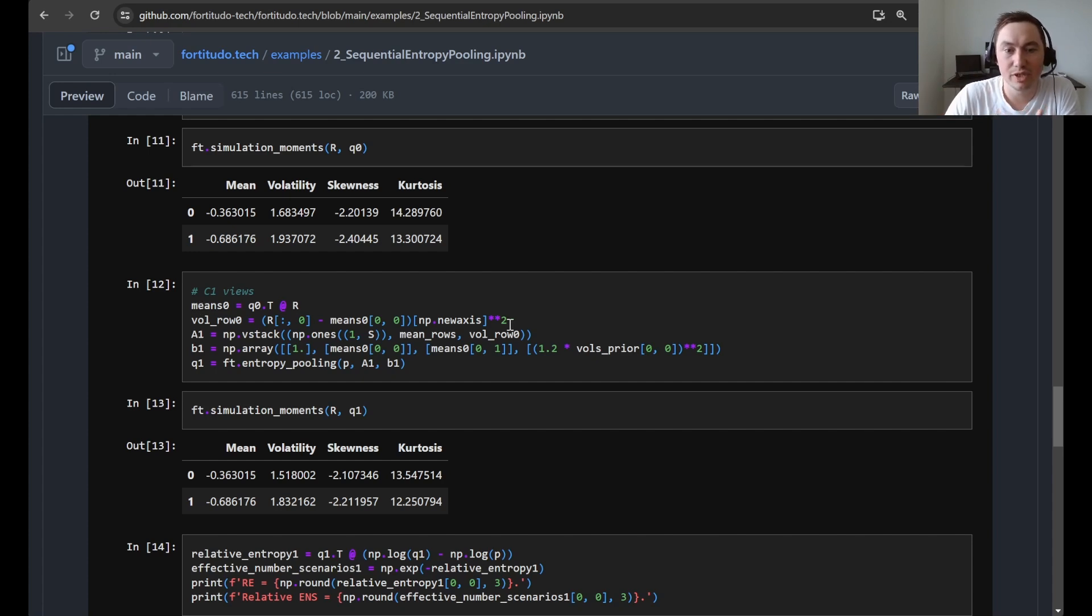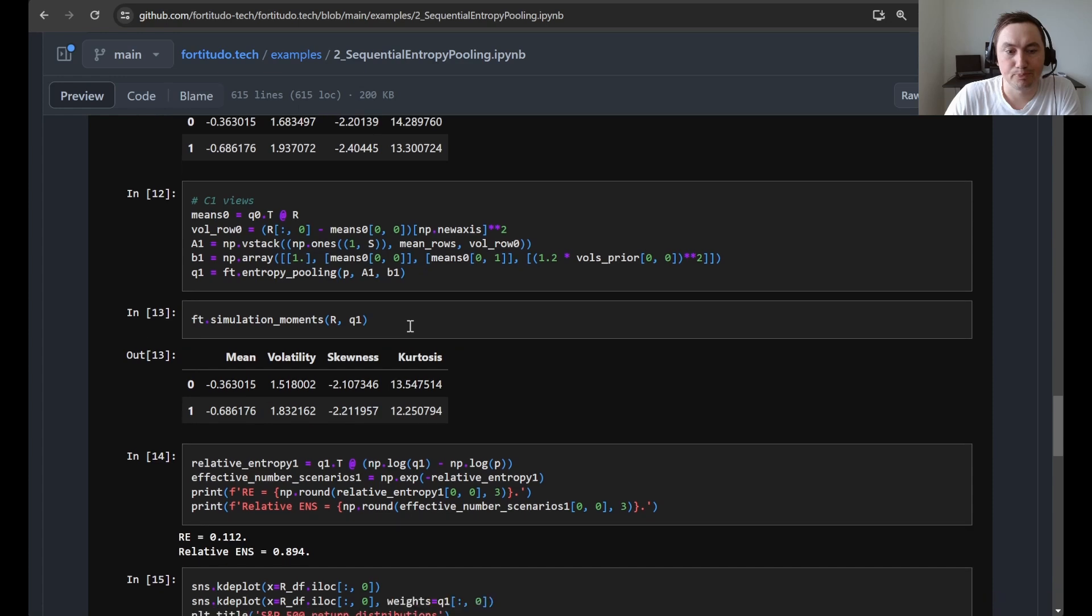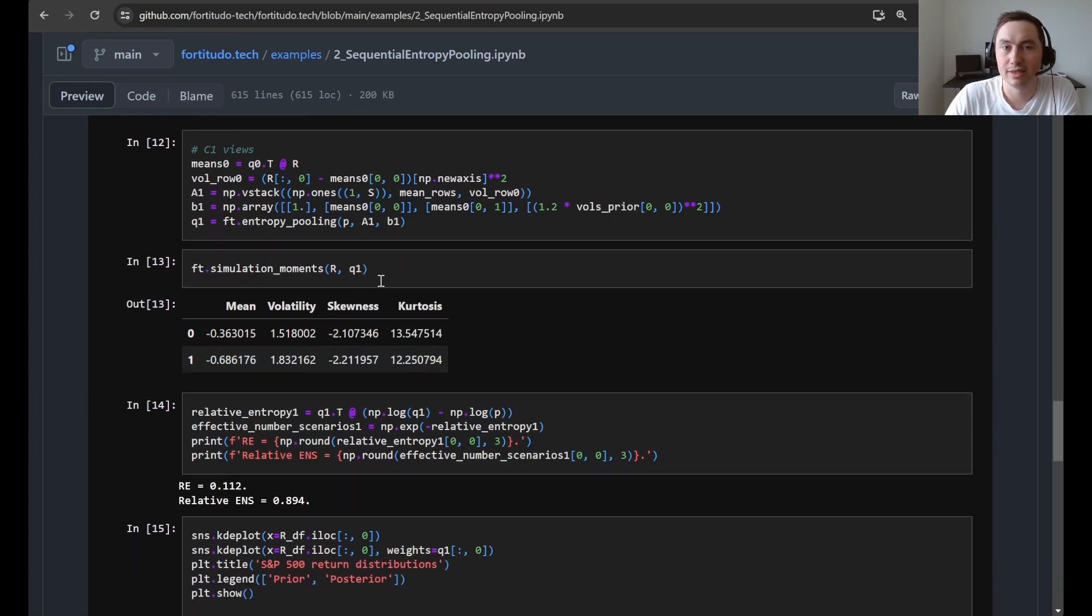So this is what you see in this case here. So here we print the final posterior distribution where you can see that both the Stoxx 50 mean view is satisfied and the S&P 500 volatility view satisfied. But now you have this updated mean for S&P 500 instead of the prior.